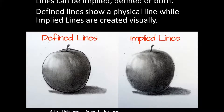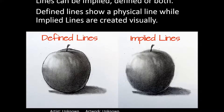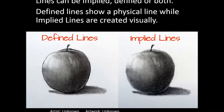For example, with the images displayed in front of you — on the left hand side you will see a defined line: an apple with a distinct black line around it. On the right hand side you will see an apple done using shading and values with no solid black line surrounding it, yet you can distinguish the difference between the apple and the background because of implied lines.